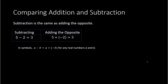Now in symbols, you can write this as a minus b equals a plus negative b. And that's for any real number a and b. So in other words, a minus b equals a plus the opposite of b.